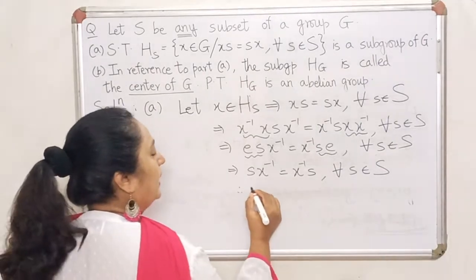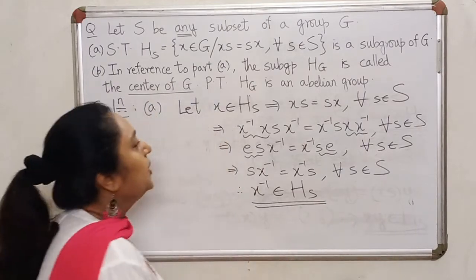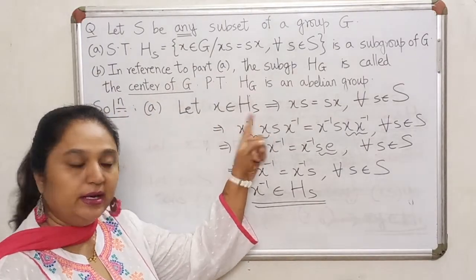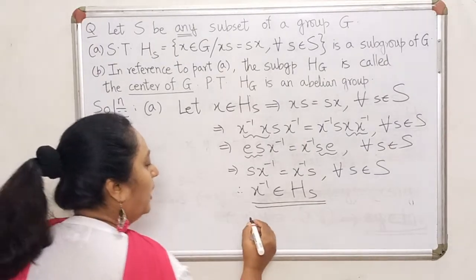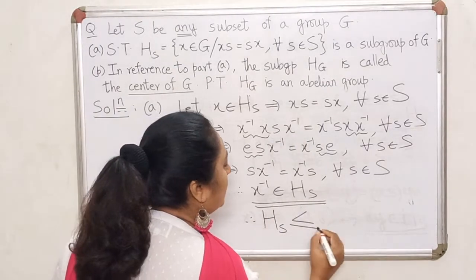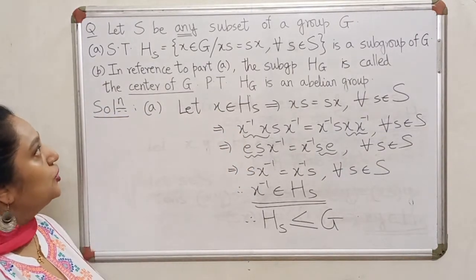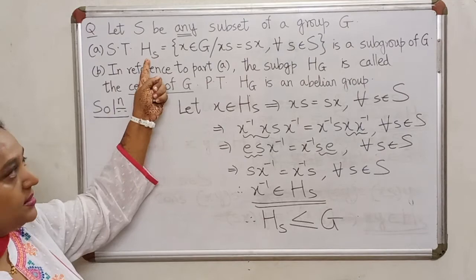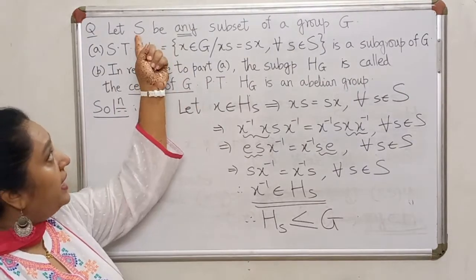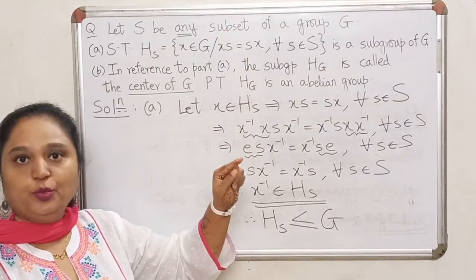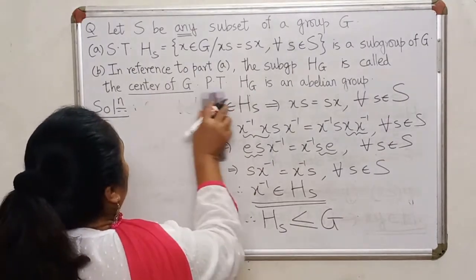Therefore X inverse also belongs to the set H_S. So if an element lies in this set, its inverse is also inside this set. We can conclude that this set is a subgroup of the group G. So for any non-empty subset S, the set H_S that we have defined actually becomes a subgroup — even if S itself is not a subgroup.